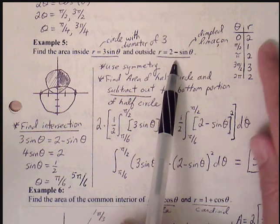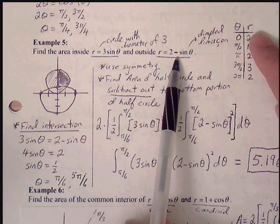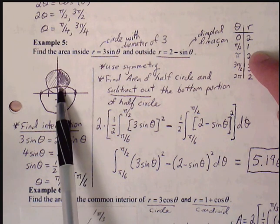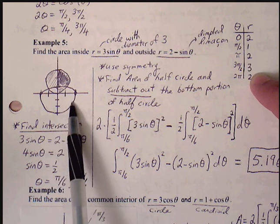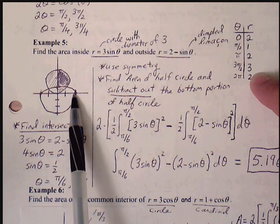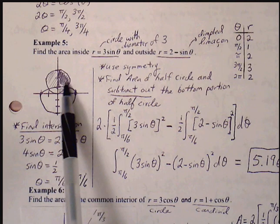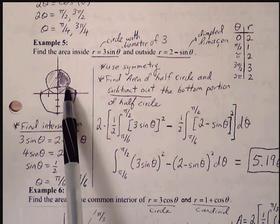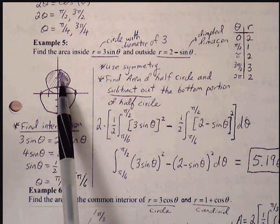For r equals 2 minus sine of theta, this is a dimpled limaçon because it never hits the pole. At theta equals 0, r starts at 2. At pi over 2, r goes to 1. At pi, r equals 2. At 3 pi over 2, r equals 3, completing the trace back to the starting point. We want just the region that is inside the circle and outside this limaçon.